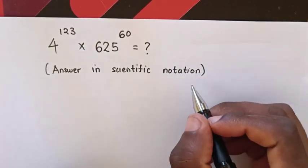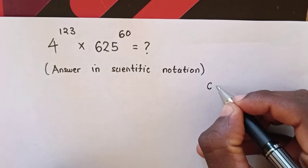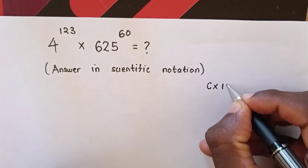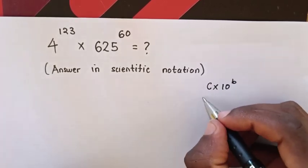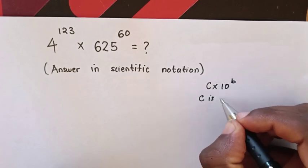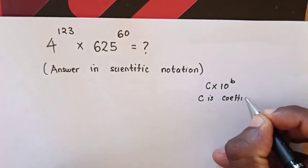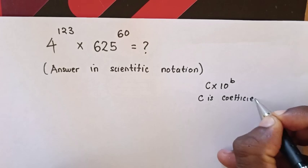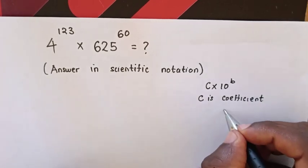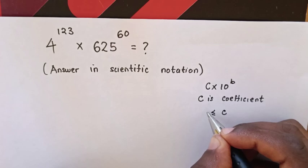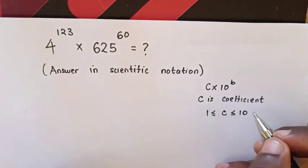Scientific notation is in the form of C times 10 power of B, whereas C is the coefficient. C should be greater than or equal to 1 and less than or equal to 10.